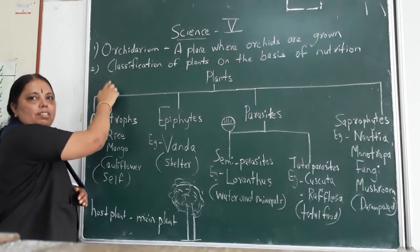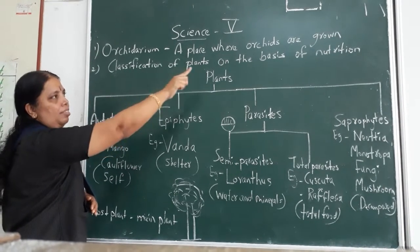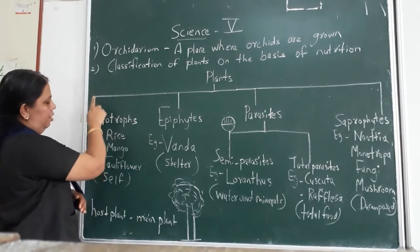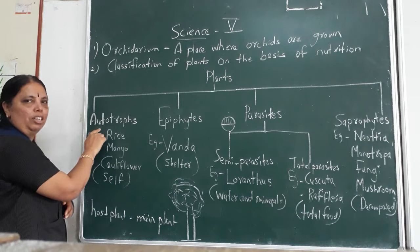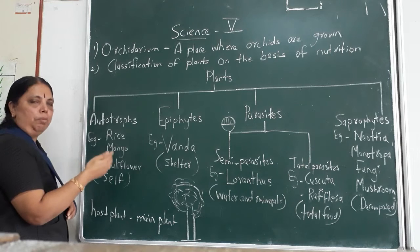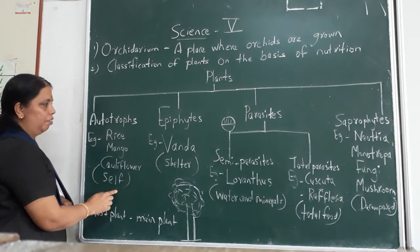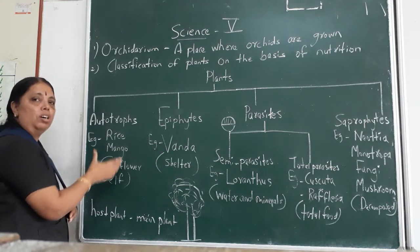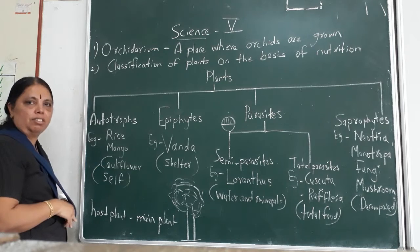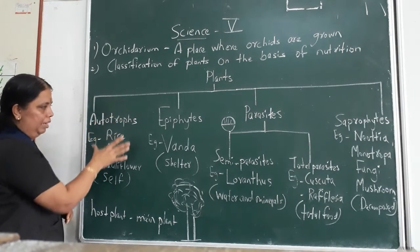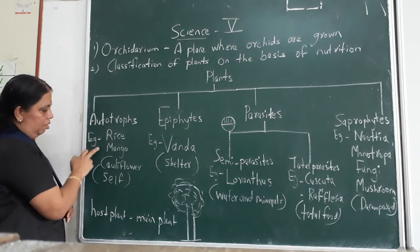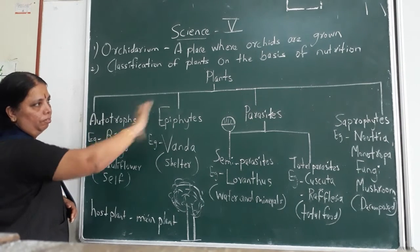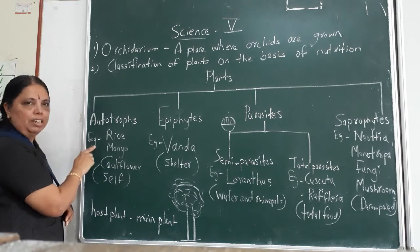Now, this is the second point: classification of plants on the basis of nutrition. So, plants — the first type of plant is autotroph. Auto means self. Automatic machine — auto means self. They can prepare food by themselves. They can carry on photosynthesis. That is autotroph. The first type of plant is autotroph. They can prepare food by themselves without depending on others. You have to listen and write the whole table that I have shown in the file.